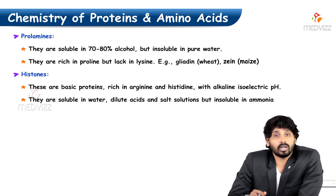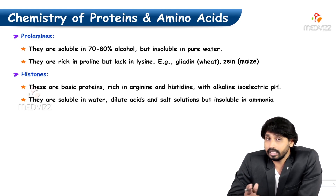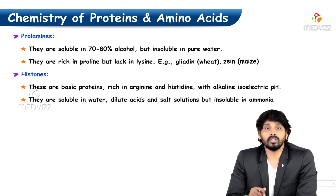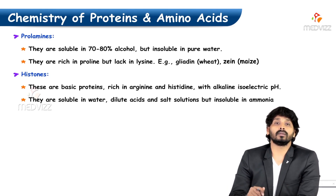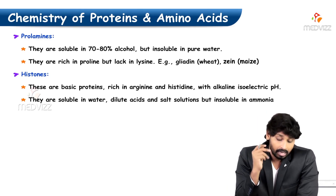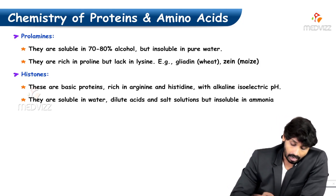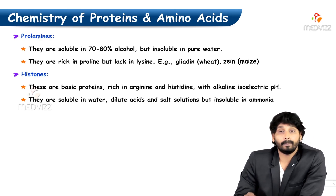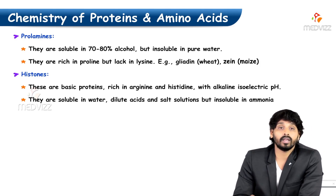Prolamines are soluble in 70–80% alcohol but insoluble in pure water. They are rich in proline but lack lysine. Examples: gliadin in wheat and zein in maize.